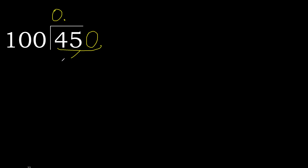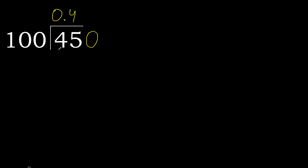450 is not less, therefore work with 450. 100 multiplied by which number is nearest to 450, but not greater? 100 multiplied by 5 is 500 — that is greater. 100 multiplied by 4 is 400 — ok, that is not greater.